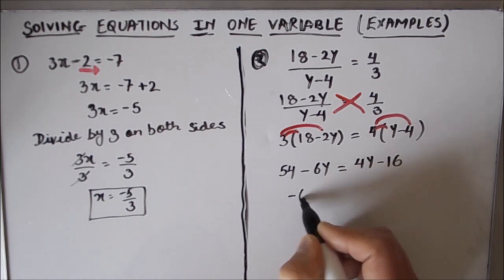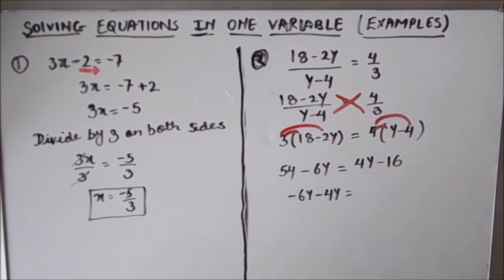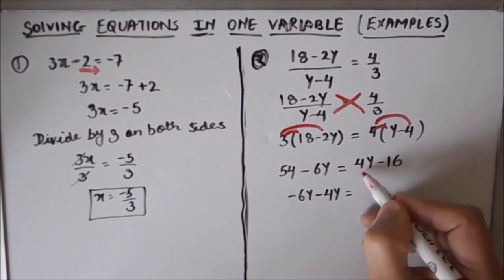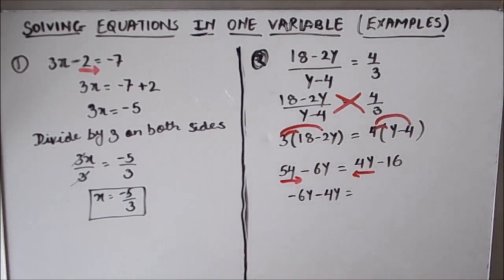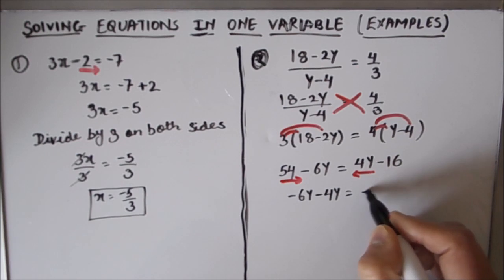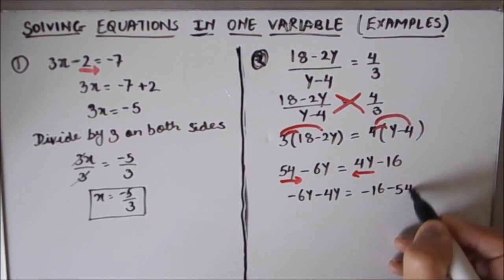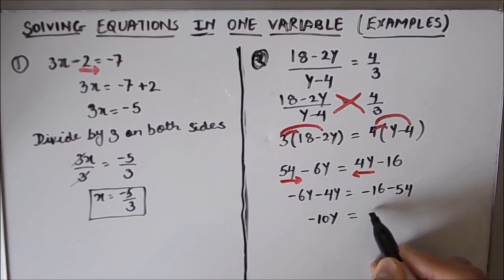Now again we have to separate the constants and the variables. So variables are minus 6y and this 4y, we are going to transpose it to this side, and this constant we are going to transpose it to that side. So this gives you minus 6y minus 4y equals minus 16 minus 54. So this gives you minus 10y equals minus 70.